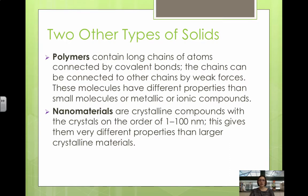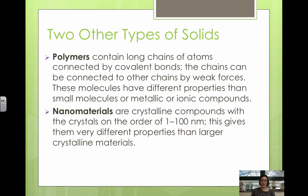Two other types we won't go into much detail with are polymers and nanomaterials. Polymers are long chains of atoms connected by covalent bonds — they don't fall neatly into the other solid categories because the chains can be connected by weaker intermolecular forces. But polymers are typically pretty strong with high melting points and more flexible than metallic, ionic, or covalent solids. We'll talk more about them in organic chemistry.